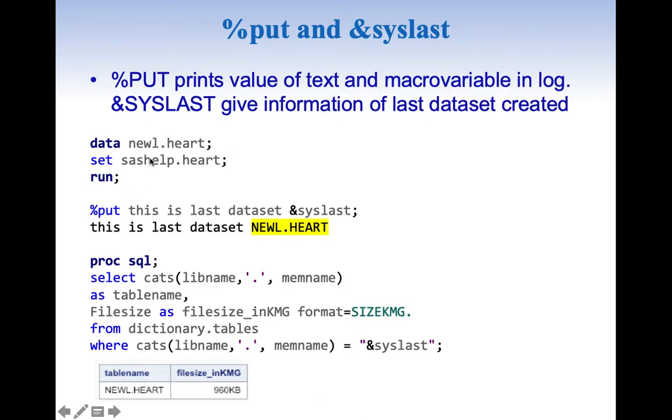Here we are creating a new dataset whose name is newl.heart and when we use %put this is the last dataset &syslast, it gives us this is the last dataset newl.heart. &syslast resolves into newl.heart, libname followed by dot followed by memname. That is what &syslast is.